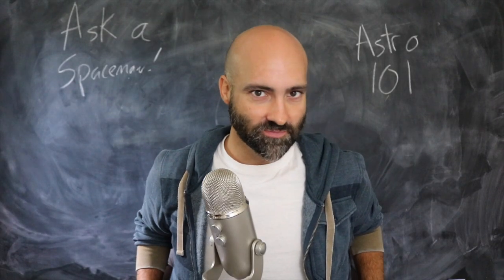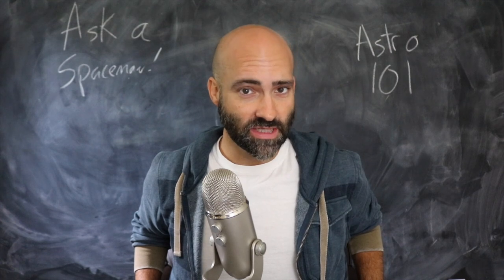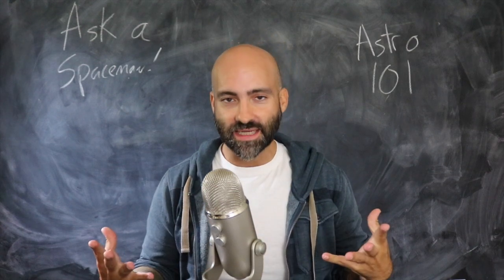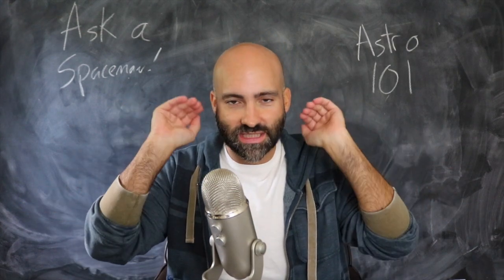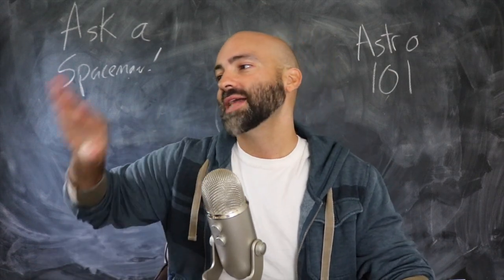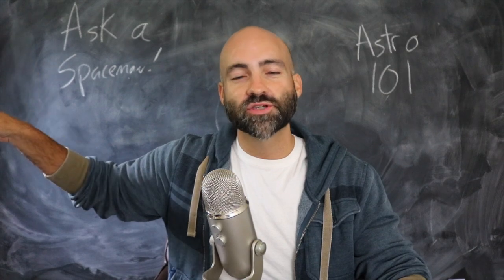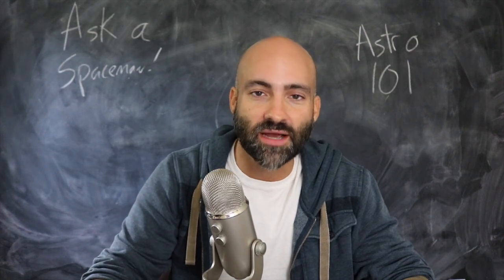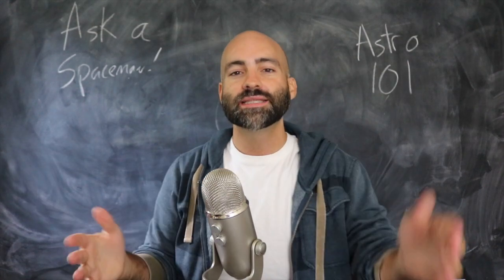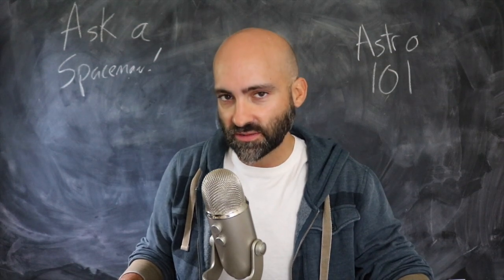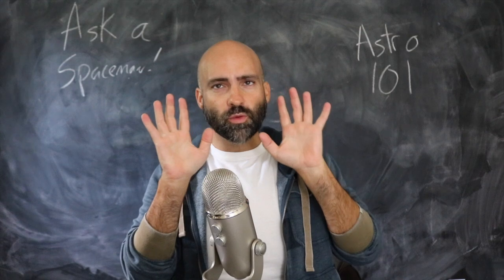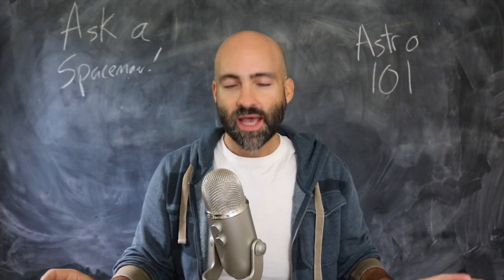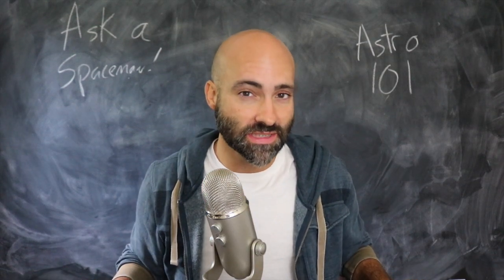Hey everyone, we are continuing — and by 'we' I mean me — the Astro 101 series, where we go over some basics in astronomy as a refresher, to lock some stuff in, so that if I bring this stuff up in a future video I can reference back. Today I want to talk about the formation of the solar system. We have a broad brush sketch of how it formed, but there are a lot of questions and details we don't understand.